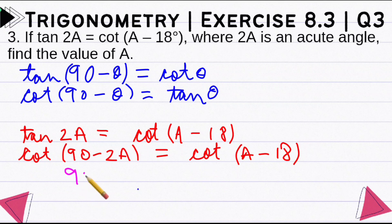We can write this as 90° minus 2A equals A minus 18°. And if we solve this, then 2A plus A equals 3A. And 18° comes here, so this equals 90° plus 18°, which equals 108°.